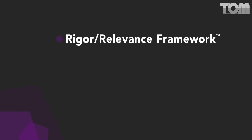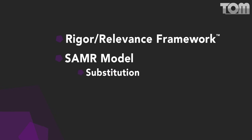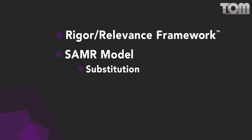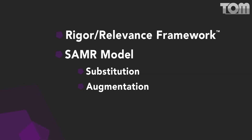The next one is the SAMR model. At the lower levels, we talk about substitution, where technology acts as a direct substitute with no functional change. Next is augmentation, where technology acts as a direct substitute with functional improvement. Then we can progress to modification, where technology allows for significant task redesign.